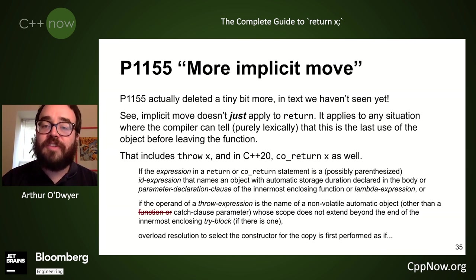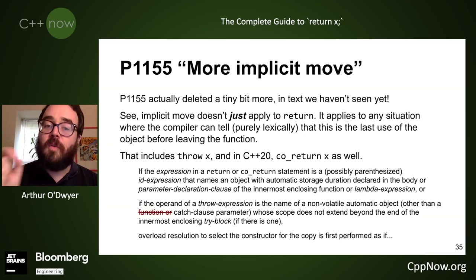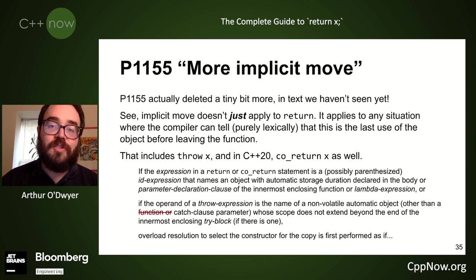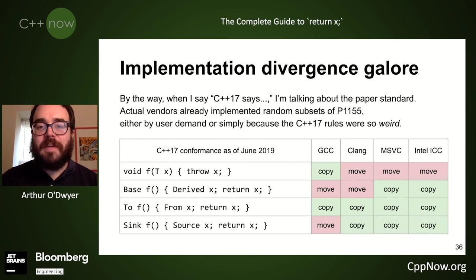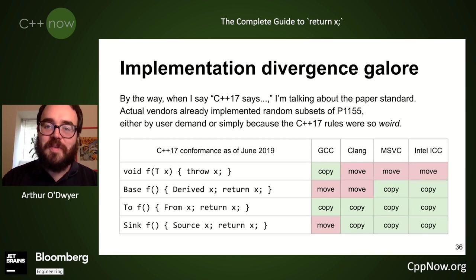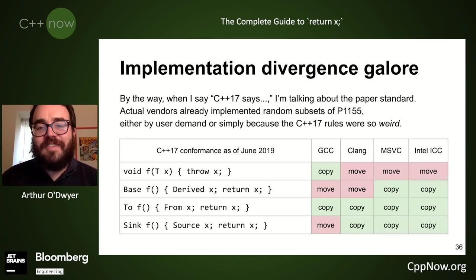When I say C++17 said you had to make a copy and C++20 says you don't — that's the paper standard. Actual compiler vendors already implemented random subsets of the new behavior, either because users wanted it or because the old rules were so weird they got them wrong. As of three days ago on Compiler Explorer: in C++17 mode, compilers were conforming and non-conforming in scattered ways; in C++20 mode, GCC 11 is totally conforming with P1155 rules. Clang 12 hasn't quite caught up but trunk already has. MSVC and ICC haven't started yet.